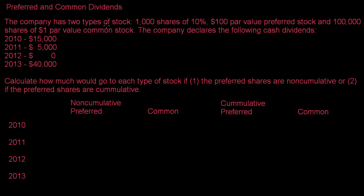So if the company has two types of stock — 1,000 shares of 10% $100 par value preferred stock and 100,000 shares of $1 par value common stock — whenever a dividend is going to get paid the preferred shareholders are always going to get paid first. The problem is to calculate how much would go to each type of stock if the preferred shares were non-cumulative or if the preferred shares were cumulative.